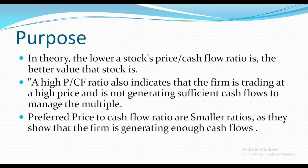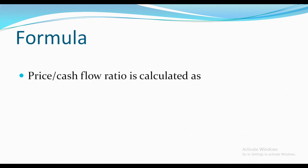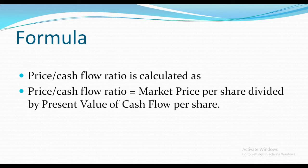Preferred price to cash flow ratios are smaller, as they show that the firm is generating enough cash flow to manage its operations efficiently. These firms are ideal for investments as they show high growth potential. The formula: price to cash flow ratio is calculated as market price per share divided by the present value of cash flow per share.